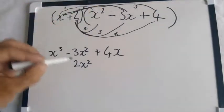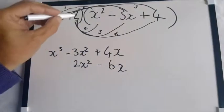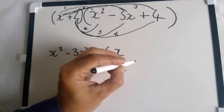Right. And 2 times minus 3x, which will give us minus 6x. And 2 times 4, which will give us 8.